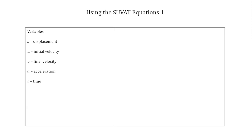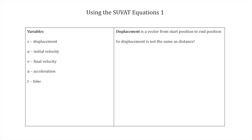Let's look in more detail at displacement, as it's the one that confuses people most. Velocity, acceleration, and time are hopefully familiar ideas, but what do we mean by displacement? Displacement is a vector from start position to end position — the vector from where the object started to where it ended. This means displacement is not the same as distance, which is what often confuses people.